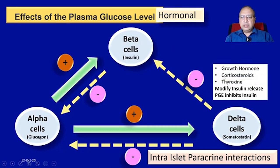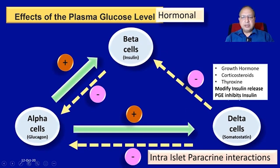Although growth hormone, corticosteroids, and thyroxine also modify insulin release, the major action is governed by the interplay of these pancreatic hormones. Prostaglandin E inhibits insulin release as well.